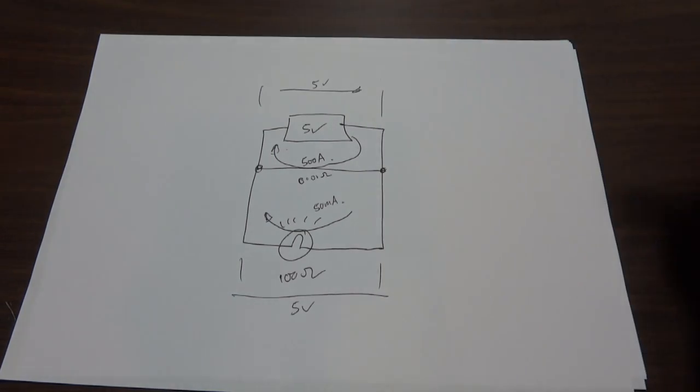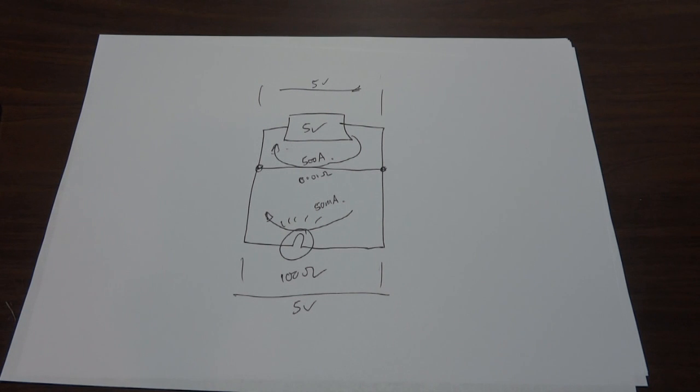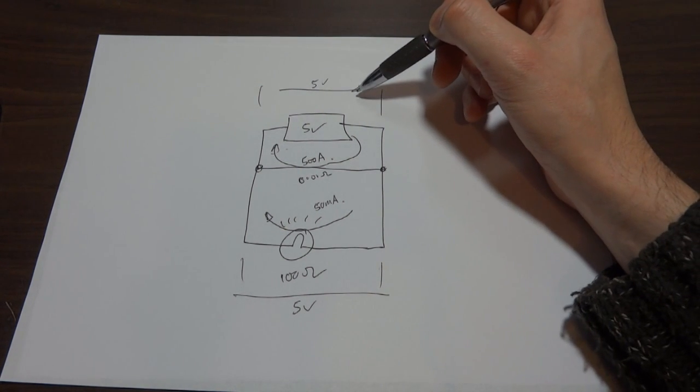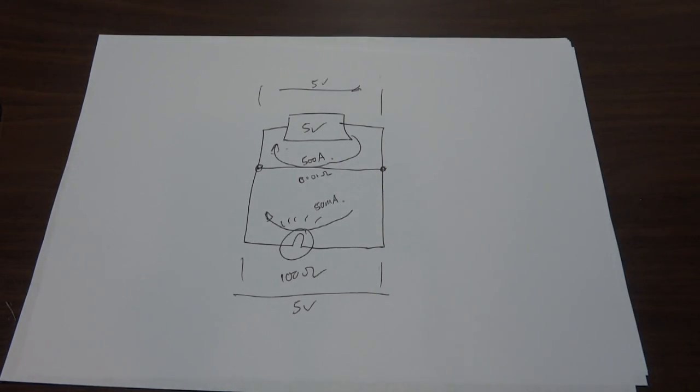So most batteries can't provide 500 amps, so the potential difference across them measured in volts drops to practically nothing. And I can demonstrate that right now.